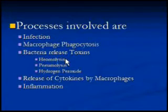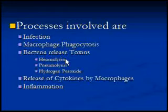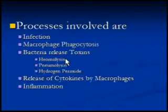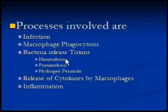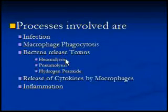Hemolysin is a toxin produced and released by some bacteria, including Streptococcus pneumoniae, which damages red blood cells in order to release hemoglobin from them, which is then used by bacteria as a nutrient — as food.